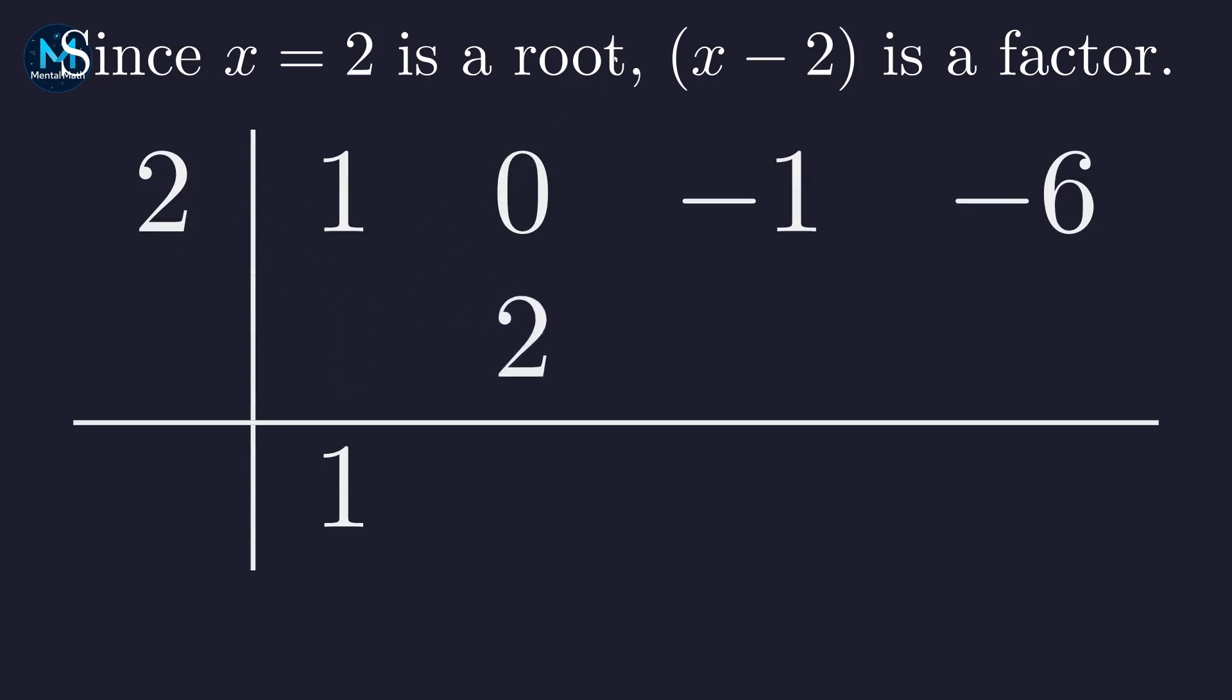Next, we multiply the number on the outside, 2, by the number we just brought down, 1, and write the result, 2, in the next column. Now, we add the numbers in the second column. 0 plus 2 is 2. We repeat the process. 2 times 2 is 4, which we place in the third column. We add again, negative 1 plus 4 is 3.